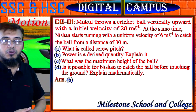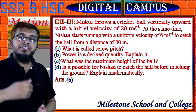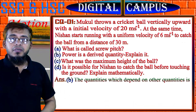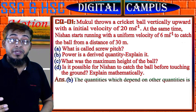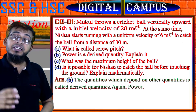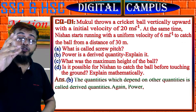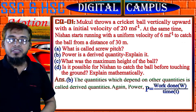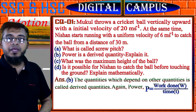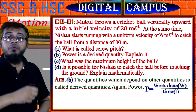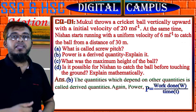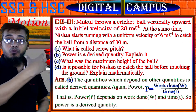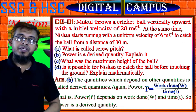Answer of B, comprehension based: The question is — power is a derived quantity, explain it. We know that quantities which depend on other fundamental quantities are called derived quantities. Power P equals work done W divided by time t, i.e., P = W/t. Here P depends on work done W and time t. Work done W is a derived quantity and time t is a fundamental quantity. Since power P depends on other quantities, power is a derived quantity.